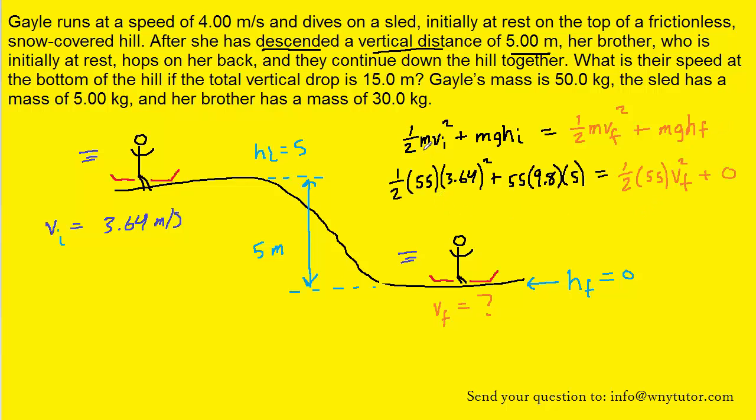Notice that for the mass, we have added the mass of Gale to the mass of the sled to come up with a total mass of 55 kilograms. Also, since the final height was equal to 0, this entire potential energy term will drop out, and that's why we've put a 0 right here. We can easily solve for the final speed. When you do that, you should get 10.55 meters per second as the final speed of Gale and the sled at the bottom of the hill.